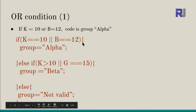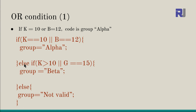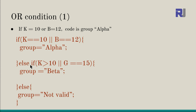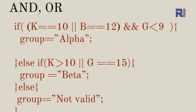Pay attention to syntax: for if, we have an opening and closing curly brace; for else-if, opening and closing; for else, also opening and closing. In C and C++ — which is mostly similar to Arduino — else-if needs a space between else and if. You can also combine AND and OR: for example, if (K == 10 || B == 12) && G < 9.